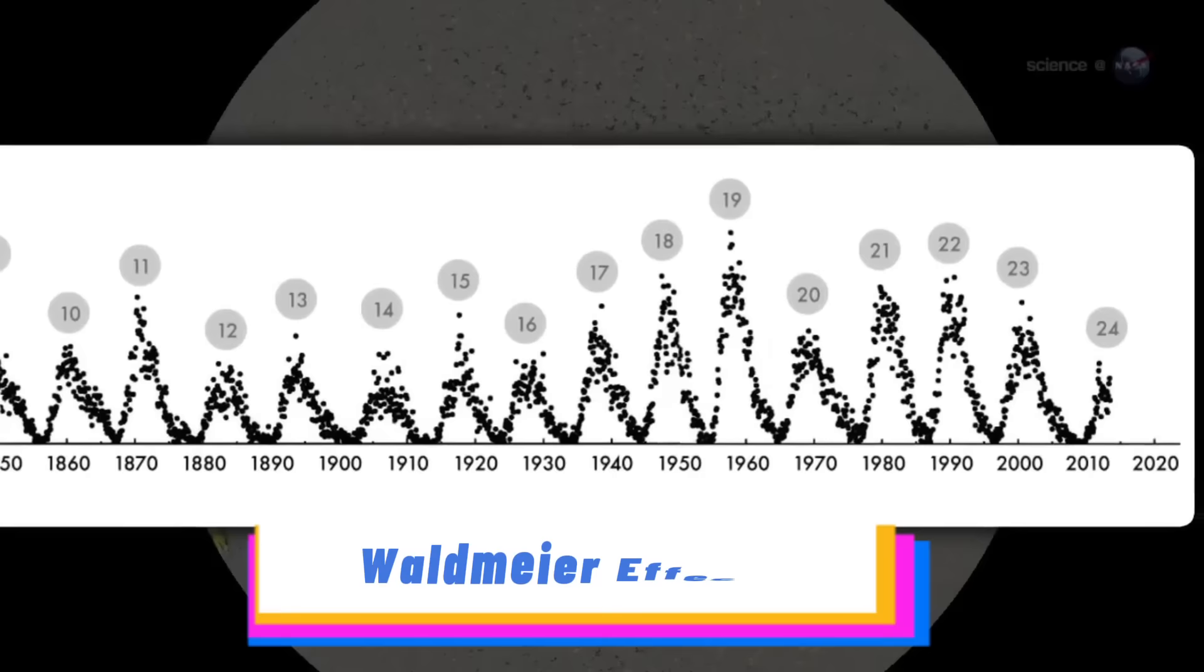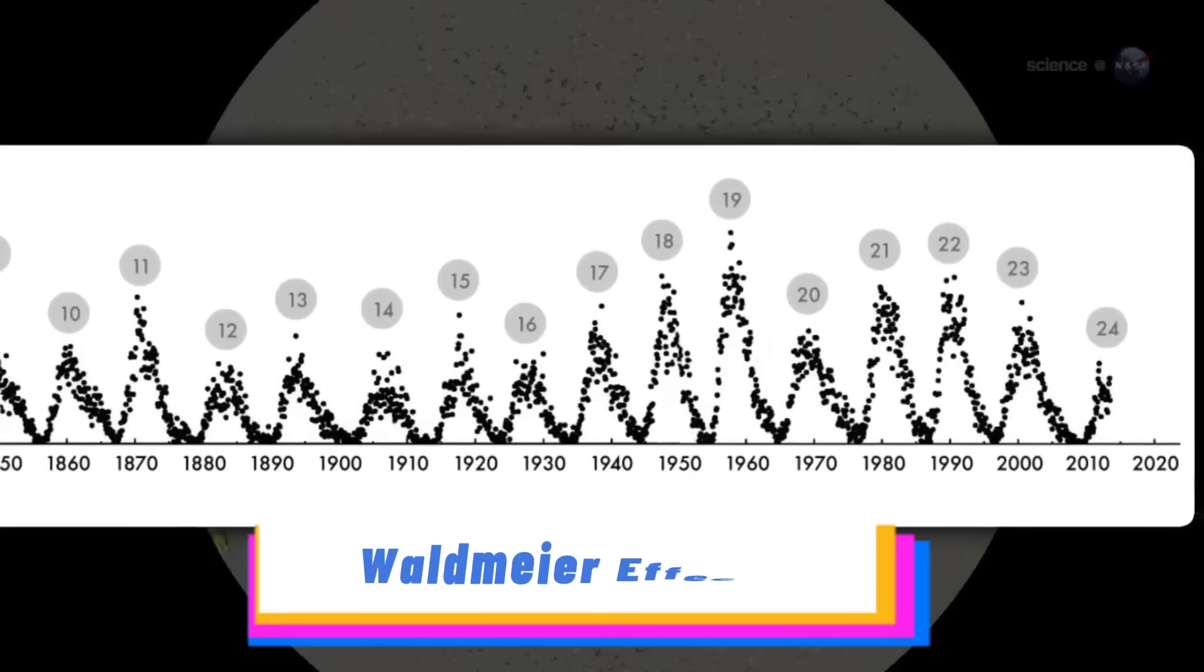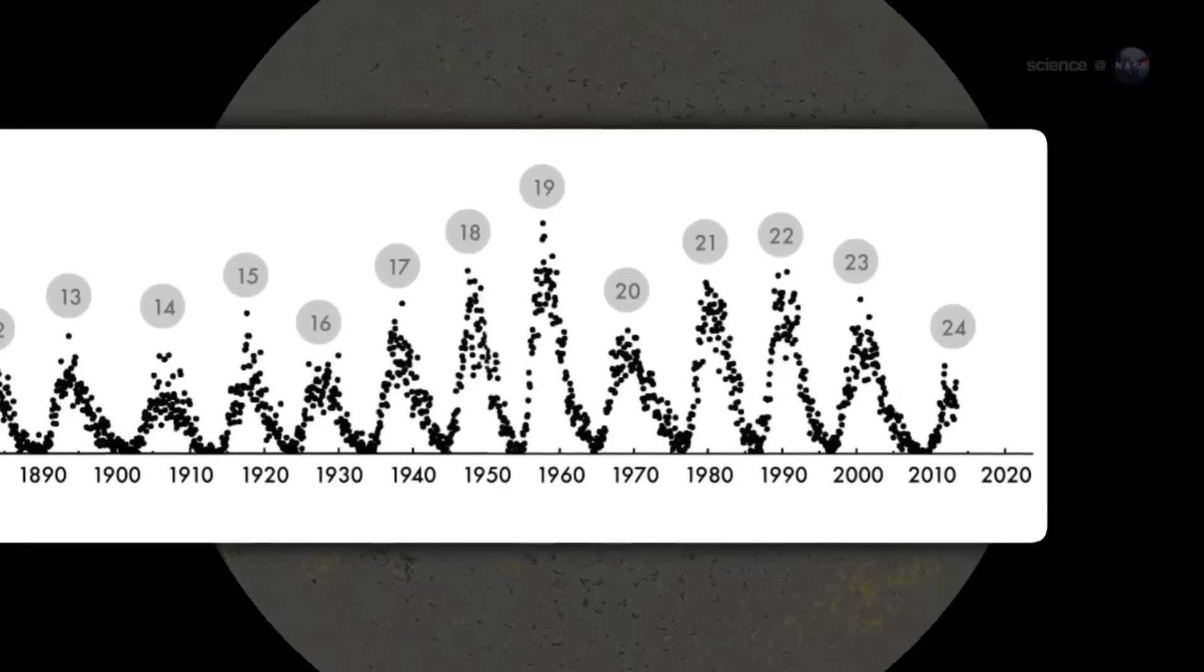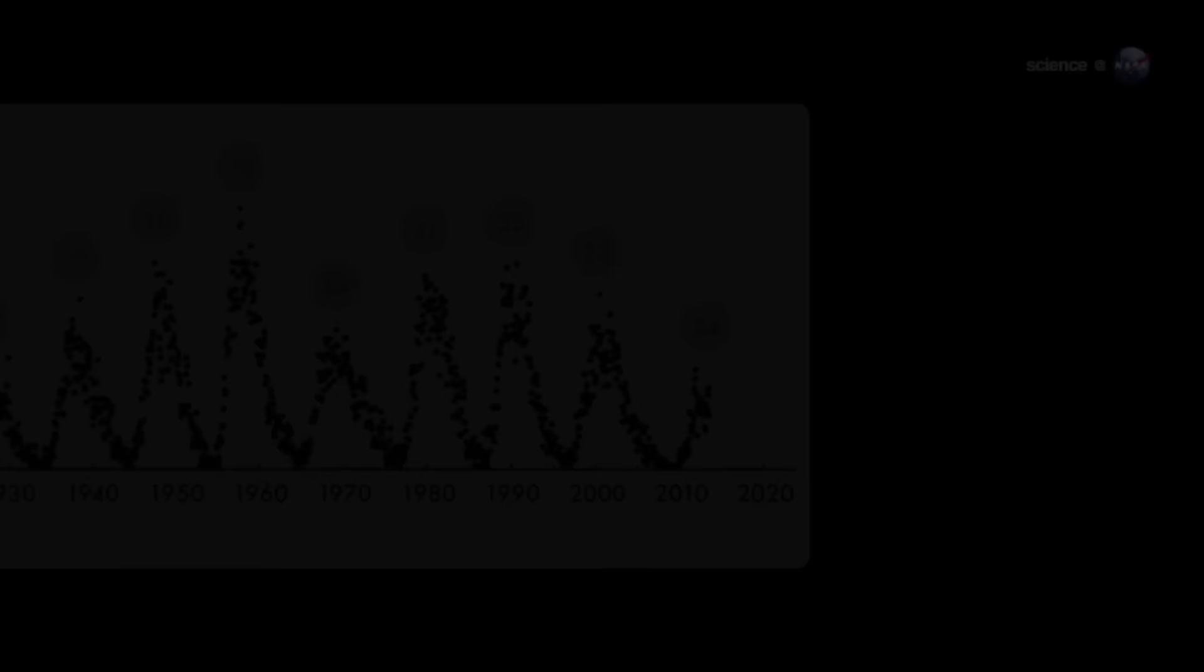This discovery, now known as the Waldmeier effect, is like a crystal ball for scientists, helping them estimate the strength of a sunspot cycle by observing its early stages of development.